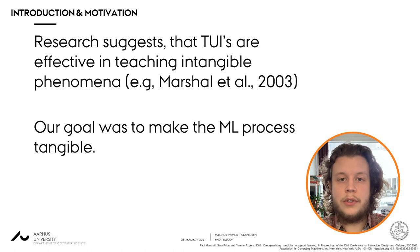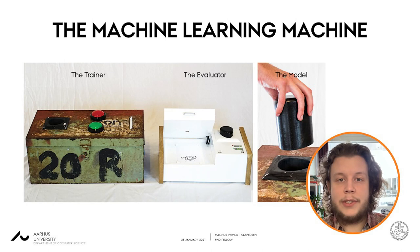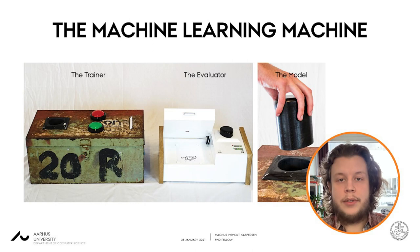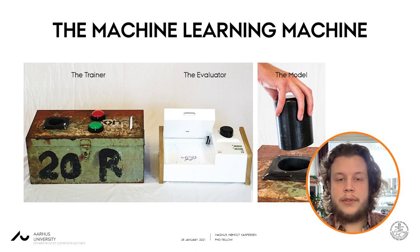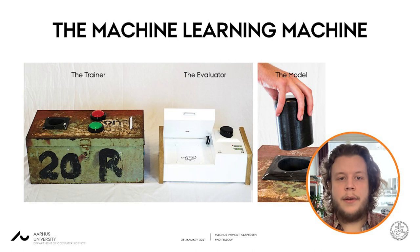And now for the main attraction of this presentation: the machine learning machine itself. Overall, it works as a typical image classifier, similar in concept to Google's Teachable Machine. Users provide a dataset of two classes of images — these could be pictures of the sun and the moon — and then classify each piece of data as belonging to one of the two categories. The machine learning machine consists of two interactive devices: the trainer for training machine learning models and the evaluator for evaluating these models. The machine learning model itself is represented by a physical artifact, and students use simple pen and paper to create data.